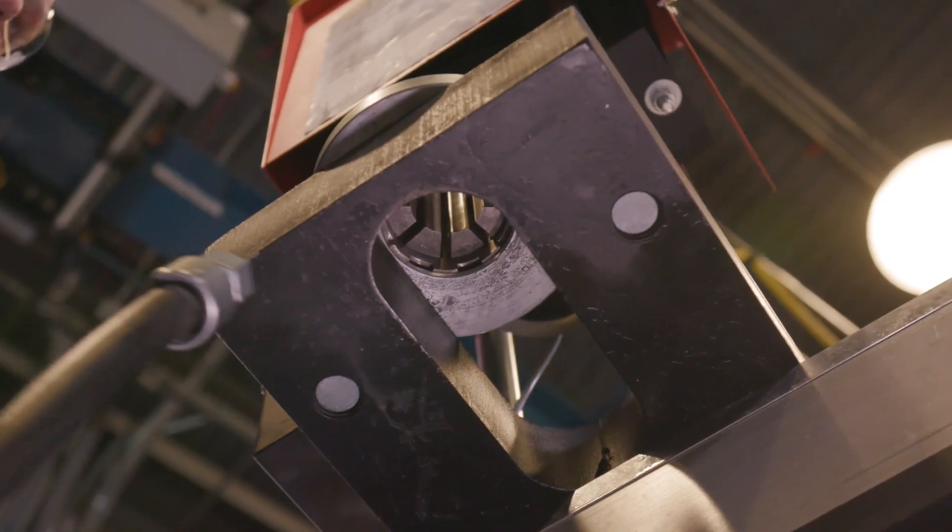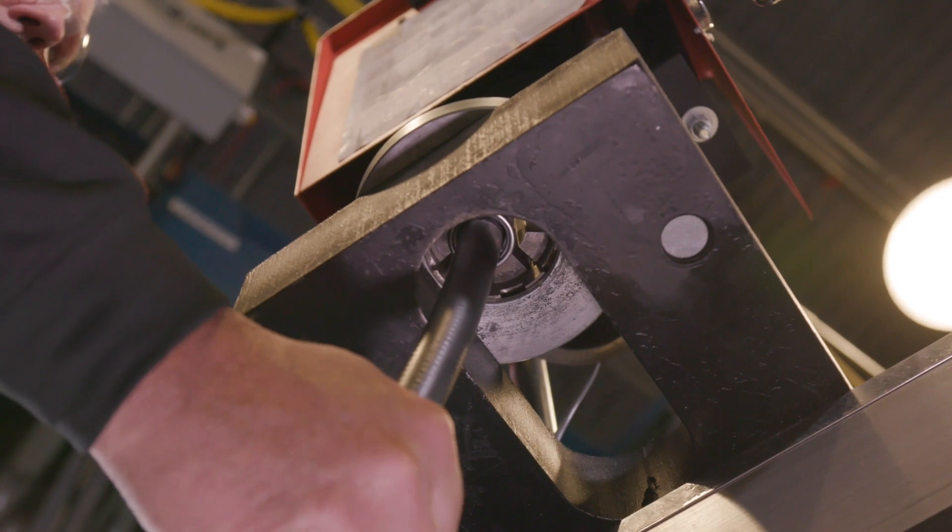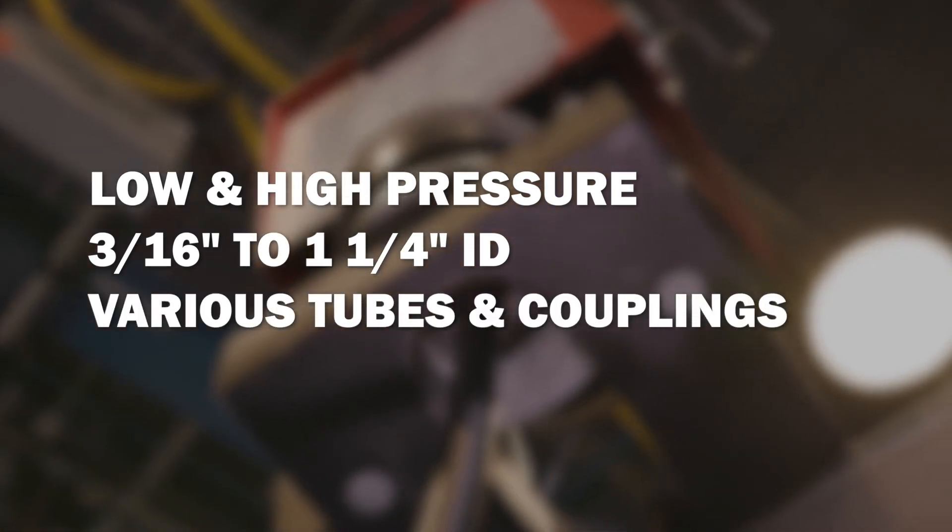Introducing the Gates PC-707 crimper. The PC-707 crimps most hydraulic hose from low to extremely high pressure from 3/16 to 1 and a quarter inch inner diameter plus a variety of tubes and couplings.